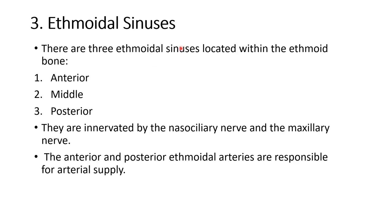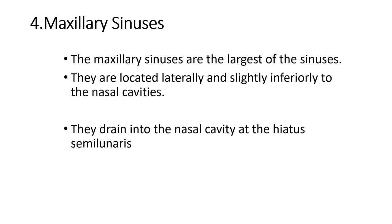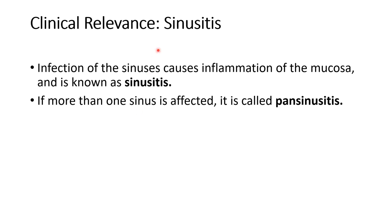About the ethmoidal sinus: located within the ethmoid bone, consisting of anterior, middle, and posterior ethmoidal sinuses. They are innervated by the nasociliary nerve and maxillary nerve, and arterial supply is from anterior and posterior ethmoidal arteries. The fourth sinus, the maxillary sinus, is the largest of all sinuses, located laterally and inferiorly to the nasal cavity, draining into the nasal cavity at the hiatus semilunaris. A clinical note on paranasal sinuses: sinusitis is inflammation of the mucosa; when more than one sinus is affected, it is called pansinusitis.